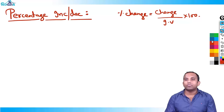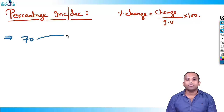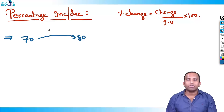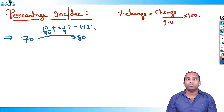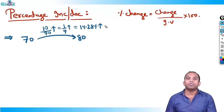If a number is changed from 70 to 80, what is the percentage change? Change of 10 on 70 — that is 1/7 increase, which is 14.28% increase.